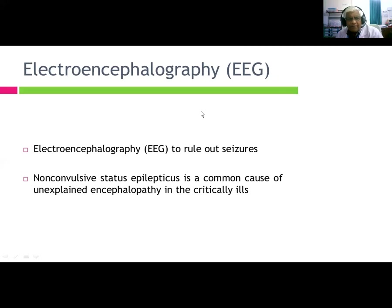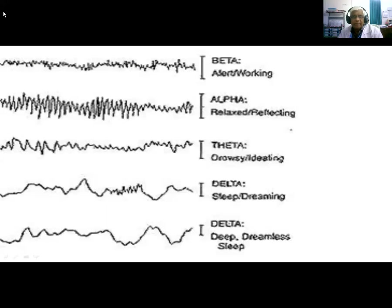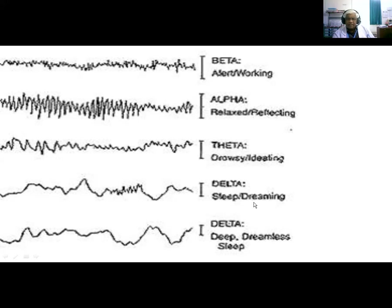CSF studies include protein, glucose, cell count, gram stain, and aerobic culture, with additional studies depending on possible etiology. Electroencephalography (EEG) is used to rule out seizures; non-convulsive status epilepticus is a common cause of unexpected encephalopathy in critically ill patients. EEG wave types: beta waves — alert/working; alpha — relaxed; theta — drowsy; delta — deep sleep or coma.